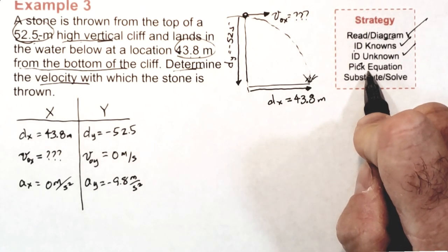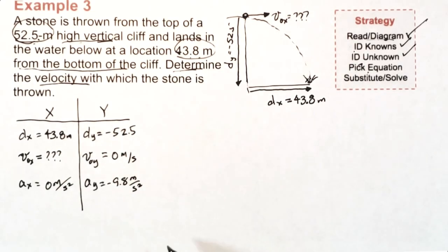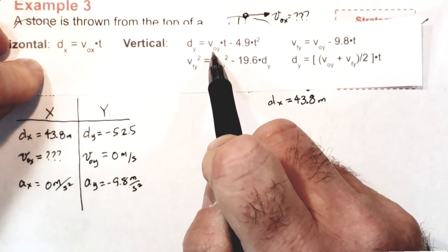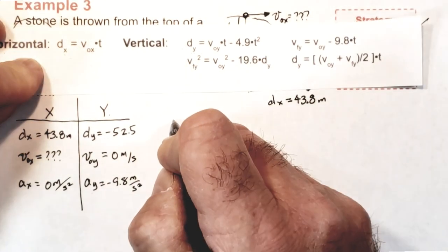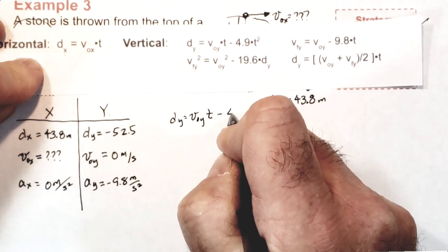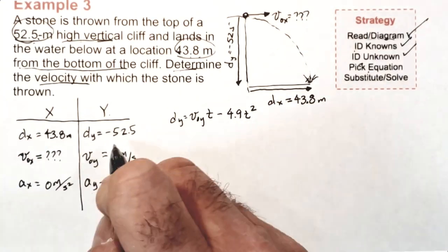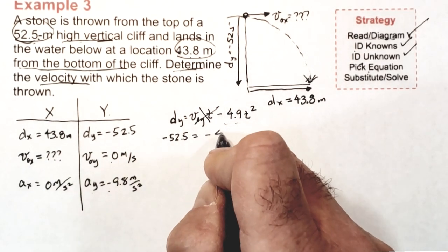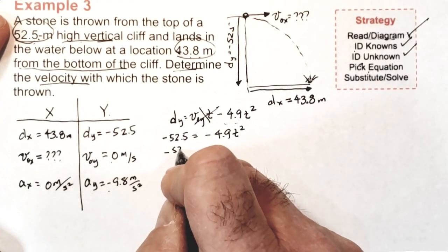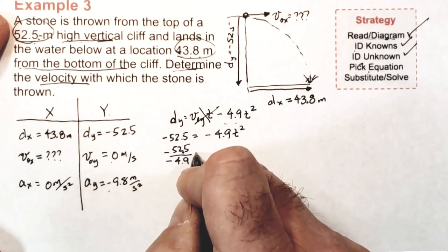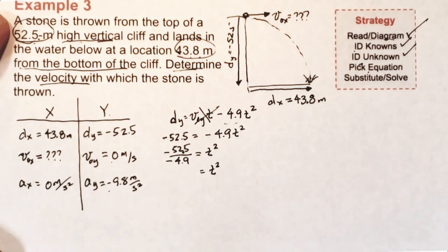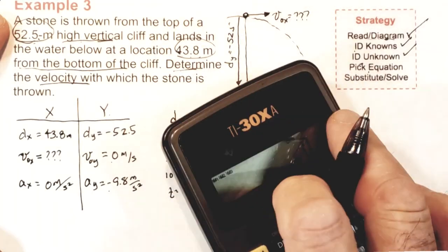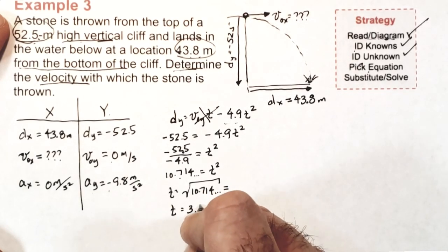Steps 4 and 5 involve picking an equation, substituting, and solving. When I look at my XY table, I see three pieces of known information in the Y column. That means I'm going to use a Y equation to solve for the time. So I inspect my equations, and I notice it's the first one, top left of the list, that I can use to solve for time. So I begin by writing it down. The VOY in this problem is 0, so the first term right side cancels. Now I substitute values of DY into the equation. I divide both sides by negative 4.9, evaluate negative 52.5 divided by negative 4.9 to be 10.714, and that's equal to T squared. If I take the square root of both sides, I will be solving for T. It's 3.27-ish seconds.